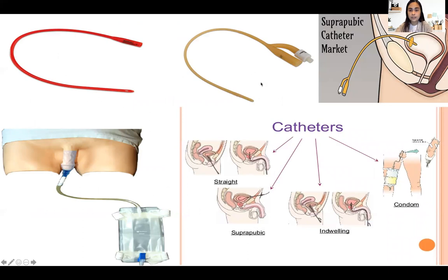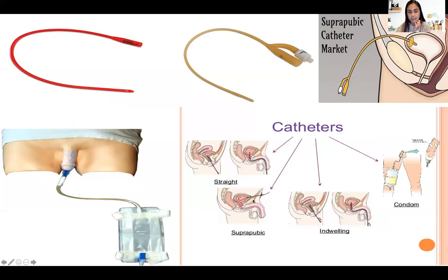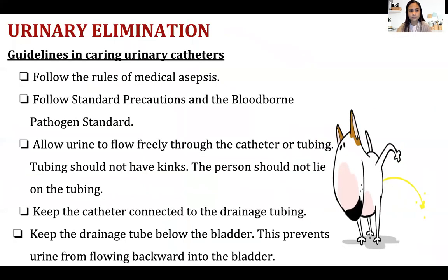On the upper right is the Foley catheter. On the lower left is the condom catheter. The suprapubic catheter is the one with an incision on the suprapubic area — they make the incision and place the catheter there. These are the types of catheters.